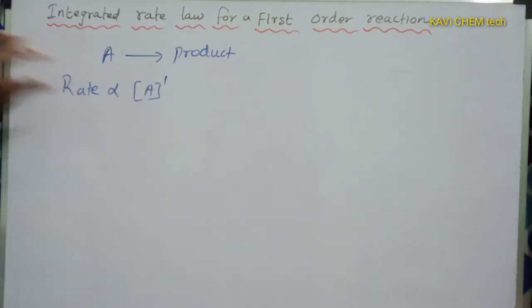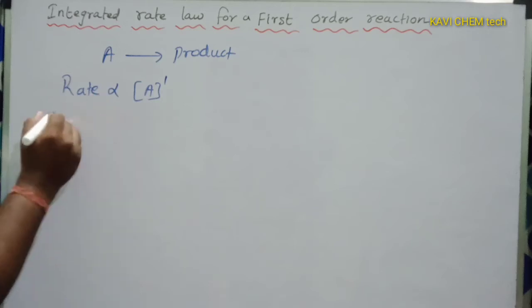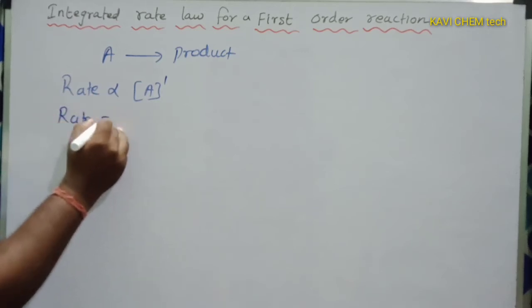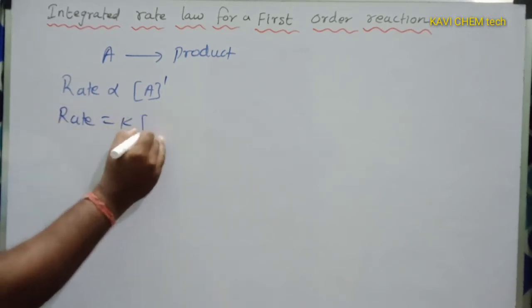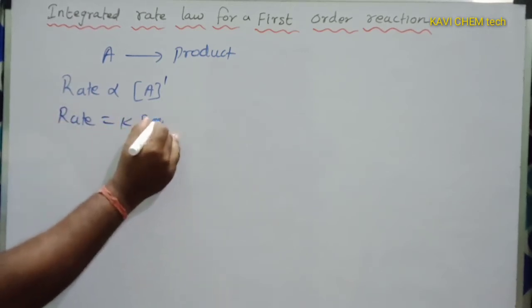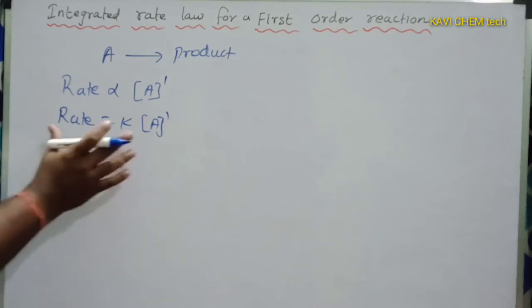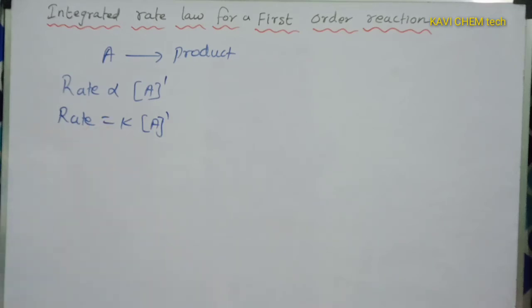If we remove the proportionality symbol, rate is equal to K times [A] to the power one. So K is the rate constant. This is the rate expression for the first order reaction.